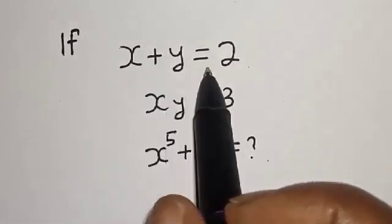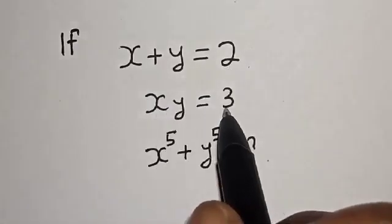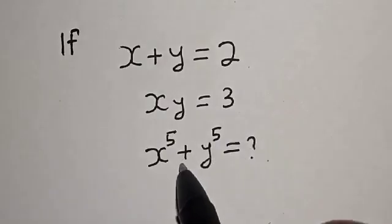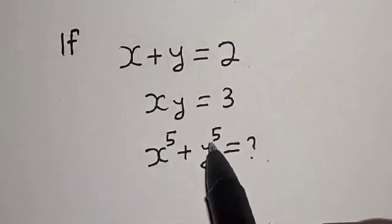If s plus y is equal to 2 and s times y is equal to 3, what is the value of s raised to the power 5 plus y raised to the power 5?